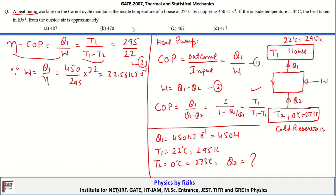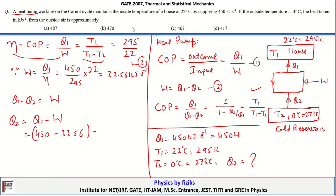Therefore, since Q1 minus Q2 equals W, and Q1 and W are both known, Q2 equals Q1 minus W, which is 450 kJ/s minus 33.56 kJ/s, giving Q2 equal to 416.4 kJ per second, approximately 417 kJ per second. This matches option D, so option D is the correct answer.